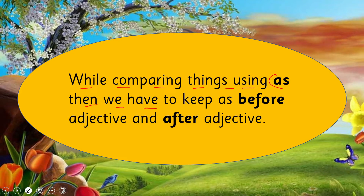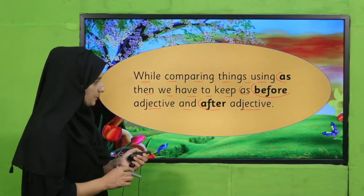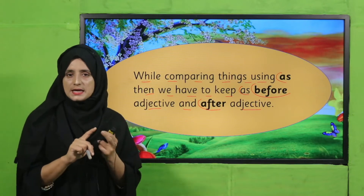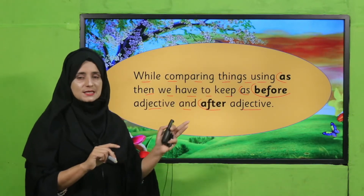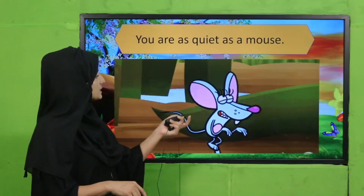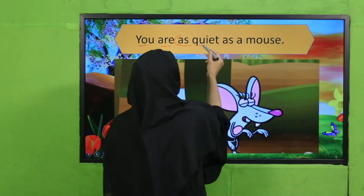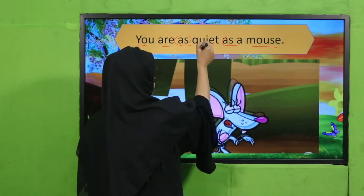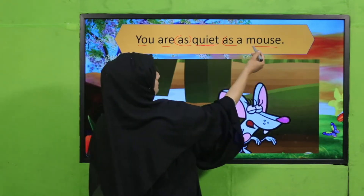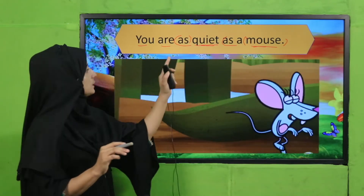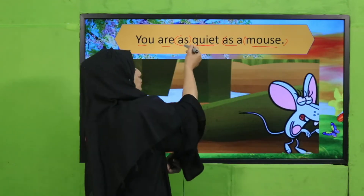While comparing things using 'as,' we have to keep 'as' before the adjective and after the adjective before the noun. The rule is: as + adjective + as + noun. For example: 'You are as quiet as a mouse' — here 'quiet' is the adjective and 'mouse' is the noun. Remember this rule when using 'as.'